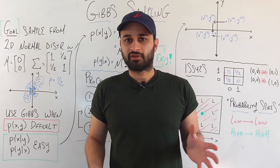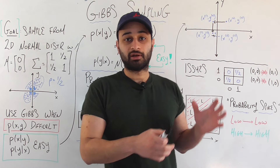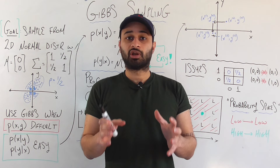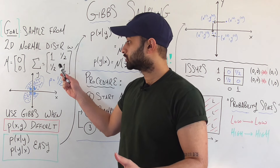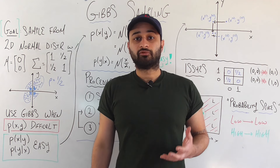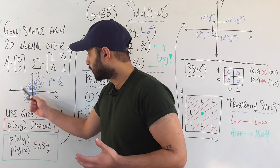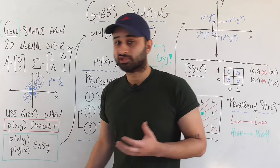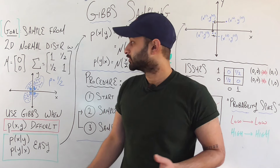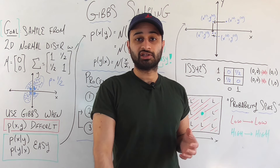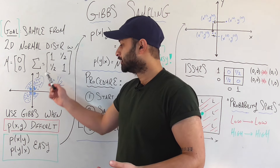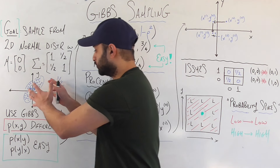There are known ways to sample from this distribution that are not Gibbs sampling, but we're going to assume we're using Gibbs sampling today, just to show how it works in practice. If we were able to sample from this distribution, we would get a plot with high density around the mean at (0,0) for x and y. The distribution is tilted because of the one-halves in the covariance matrix, and the correlation between x and y is one-half.